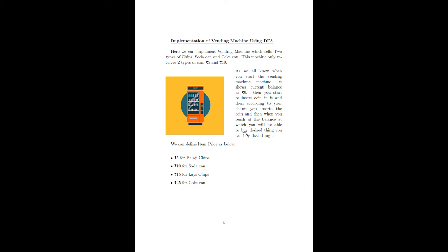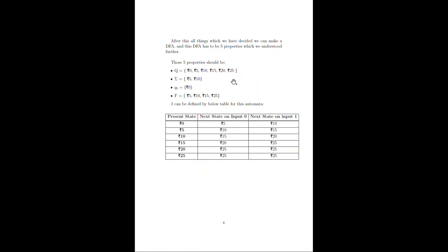As we gather some information, we can find that Q equals {0, 5, 10, 15, 20, 25} rupees, and Sigma equals {rupees 5, rupees 10} because the machine will not accept any other currency.